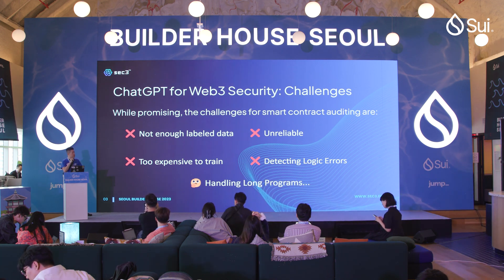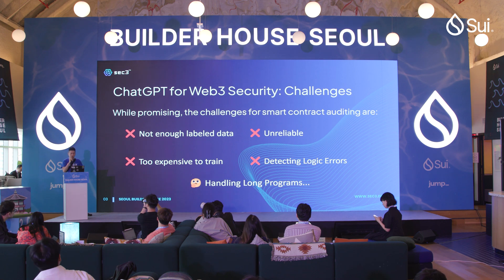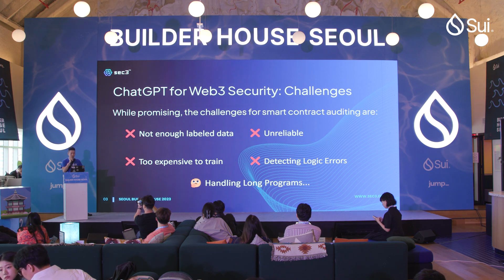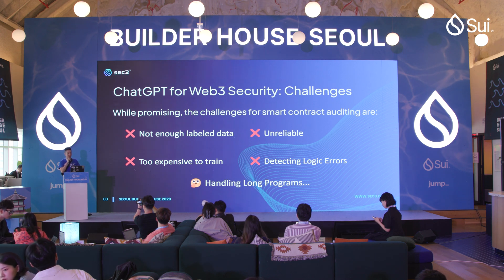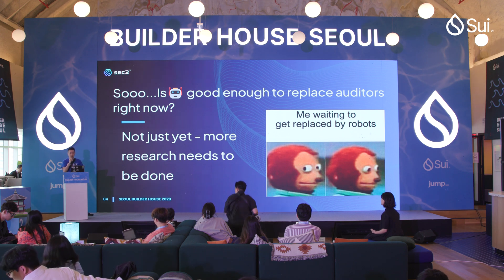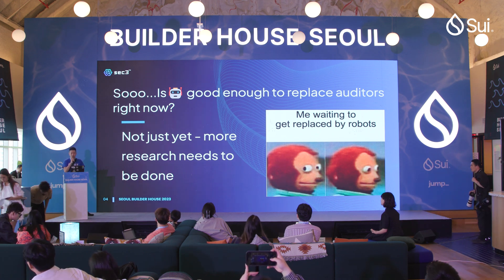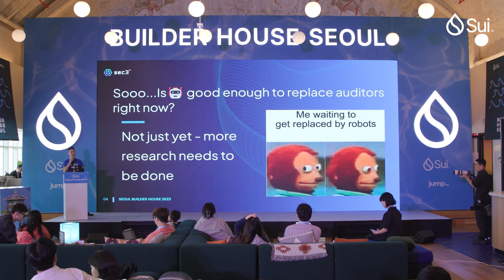What are the functionality-related challenges? Large language models are generally not good at handling long inputs, and some smart contracts may be very long, which can sometimes lead to memory corruption even if you try to feed the model code through multiple prompts. Additionally, most critical issues found in manual code audits are logic errors, unlike simple bugs that can be captured by patterns, which are hard for large language models. So, is ChatGPT and other LLMs good enough to replace auditors right now? I think the answer is still currently a resounding no, but much more research needs to be done, and things change very quickly.